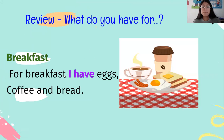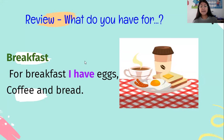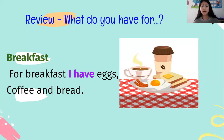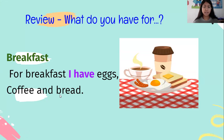¿Cuál fue lo primero que hicimos? Breakfast. ¿Qué tenemos para breakfast? Para nuestro desayuno. Por ejemplo, for breakfast, I have — si yo quiero explicar qué es lo que yo tengo en mi desayuno. ¿Qué ven aquí en la imagen? Coffee. ¿Qué más tengo yo aquí? Bread — tengo panito.